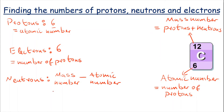For carbon, we get 12 minus 6, which means we have 6 neutrons in total.